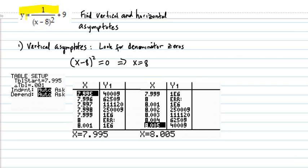Here's our function, and we want to find the vertical asymptotes and the horizontal. So for the vertical asymptotes, you want to look for denominator zeros.